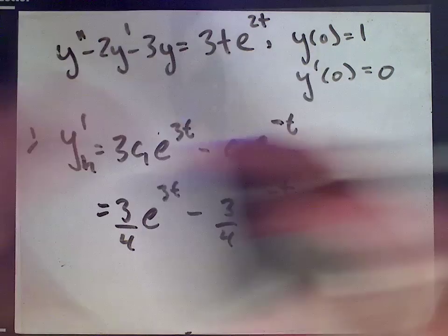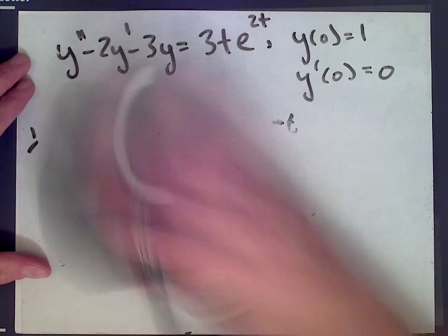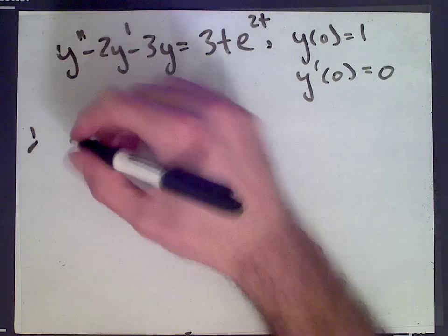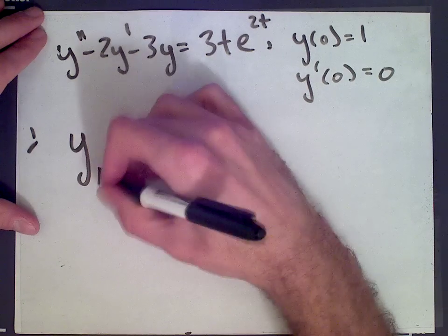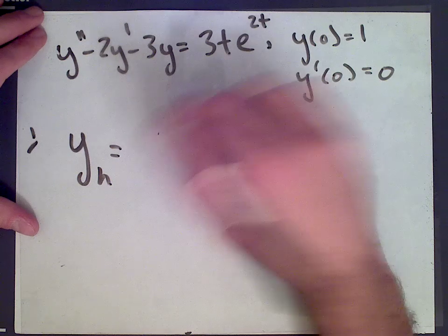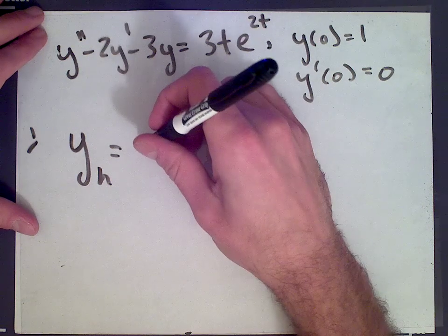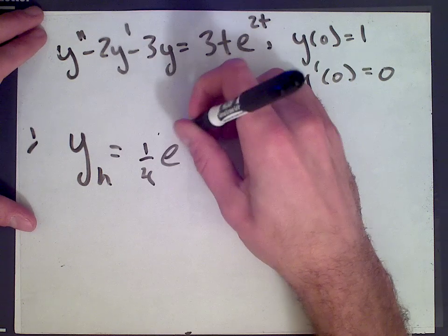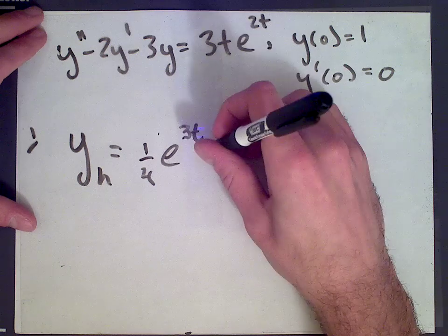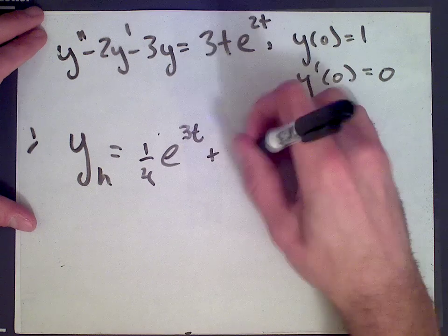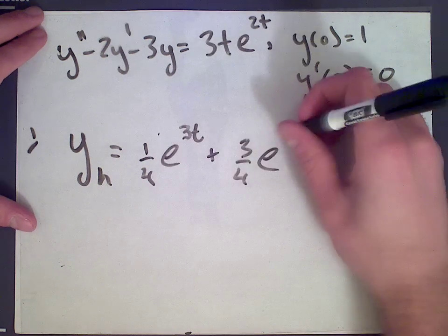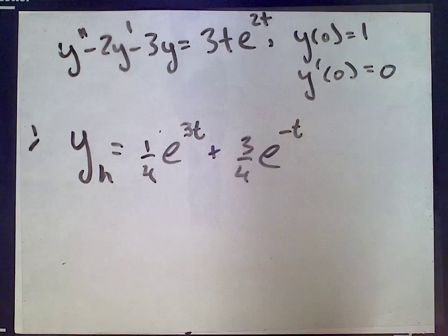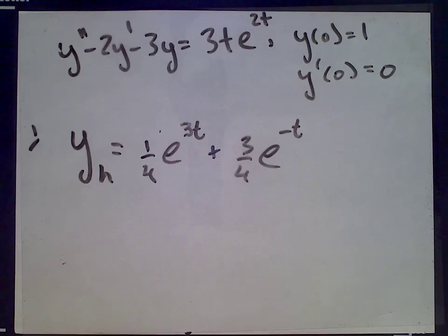So plugging these values in for yh, we get yh equals c1 — which was 1 quarter — times e to the 3t, plus c2 times e to the negative t. This is our solution to the homogeneous differential equation.